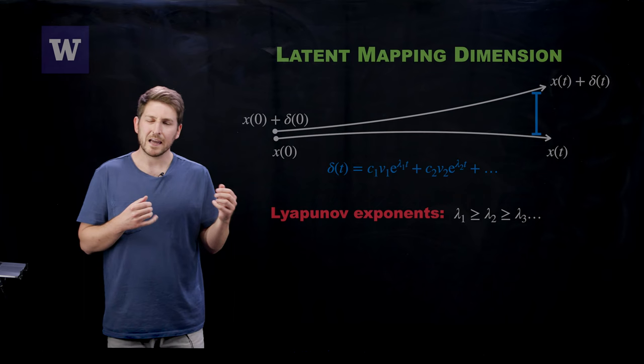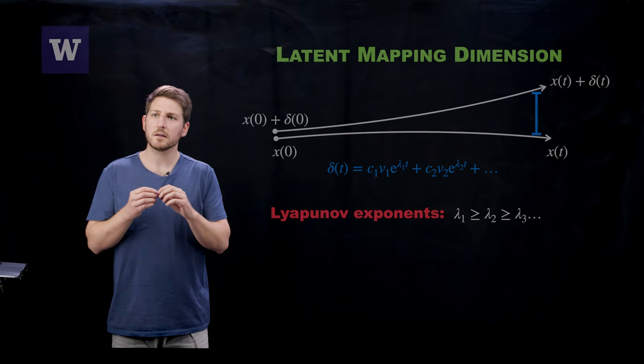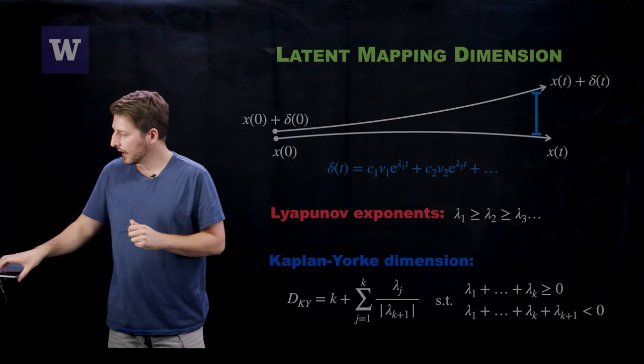And in particular, what we can do is we can order these real valued Lyapunov exponents from ascending to descending. And typically, the presence of chaos is marked by at least one positive Lyapunov exponent, which you can see from this representation right here tells us that orbits are being pushed away exponentially in time.